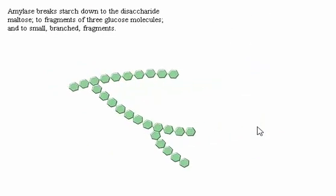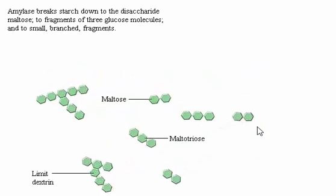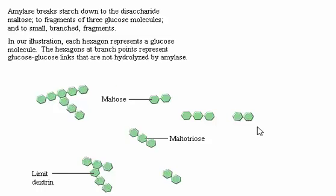Amylase breaks starch down to the disaccharide maltose, to fragments of three glucose molecules called maltotriose, and to small branched fragments called limit dextrins. In our illustration, each hexagon represents a glucose molecule. The hexagons at branch points represent glucose-glucose links that are not hydrolyzed by amylase.